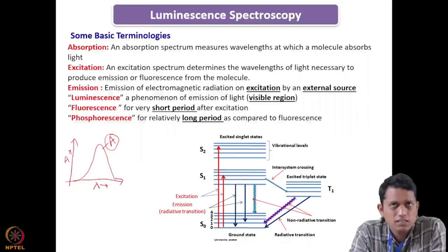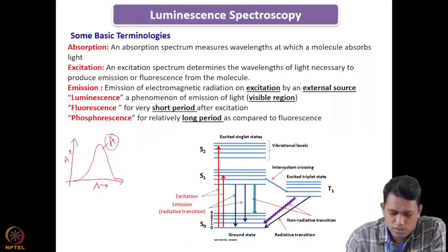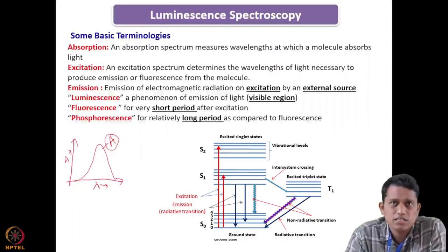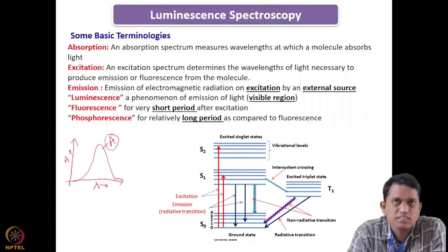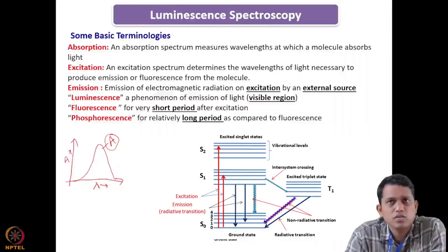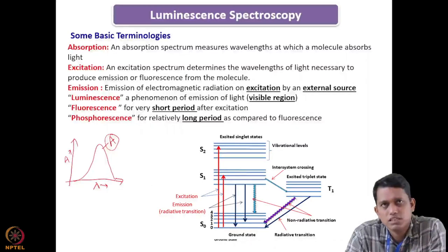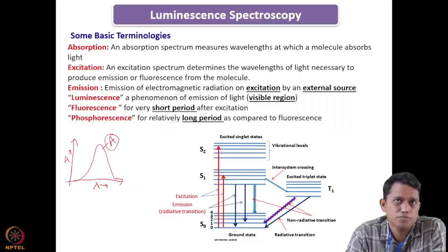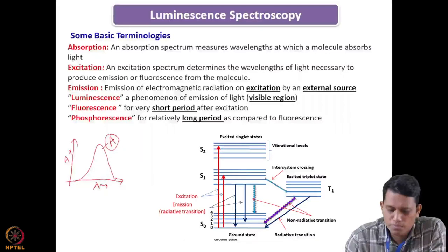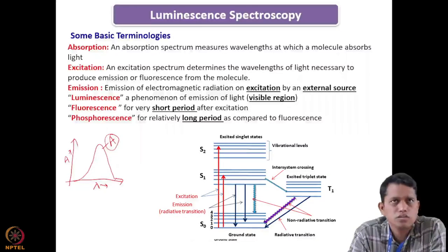As we can see from the simple Jablonski diagram, absorption starts from the ground state to any upper singlet state — singlet one, singlet two — and with vibrational relaxation it comes back to the ground state of the first excited state. From there it can either go by intersystem crossing to the triplet or come back. This coming back, if it is a radiative process, emits radiation. If this falls in the UV-visible region we call it luminescence. Depending on the decay time, it can be fluorescence — very short time after excitation — or phosphorescence, which involves singlet to triplet transition and is sometimes called delayed fluorescence.